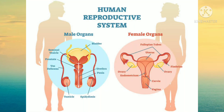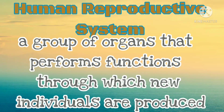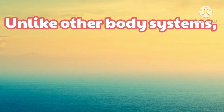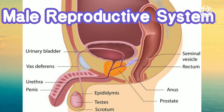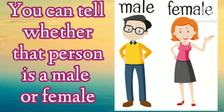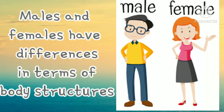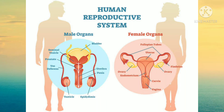This is possible through the reproductive system. The human reproductive system is a group of organs that performs functions through which new individuals are produced. Unlike other body systems, the reproductive system is unique for a specific sex. The male reproductive system is different in structure and function from the female reproductive system. Just by looking at a person, you can tell whether that person is a male or female, because males and females have differences in terms of body structures.